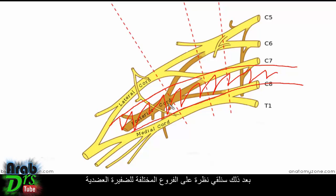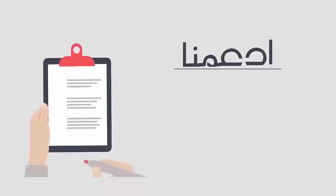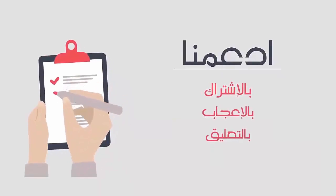That should give you a basic understanding of the structure of the brachial plexus and its location relative to surrounding structures. Next, we'll take a look at the various branches of the brachial plexus — the terminal nerves and the branches coming off the roots, trunks, and cords. See you in the next video.